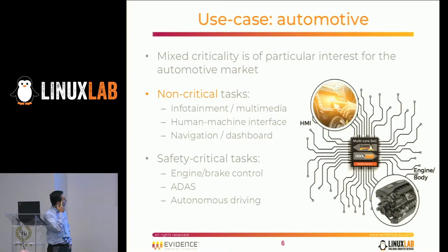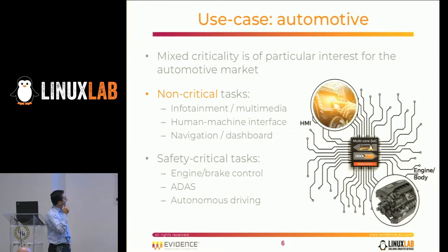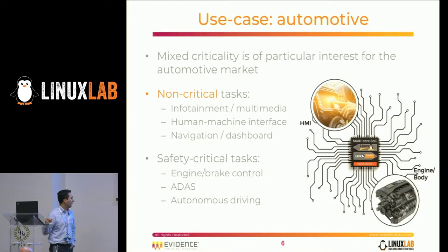I would also focus on the specific use case of automotive. In the automotive domain there is something new related to autonomous driving and assisted driving. You have non-critical tasks like infotainment, multimedia, human machine interface, navigation, and the dashboard. And you have safety-critical tasks like engine control, brake control, autonomous driving, and assisted driving.